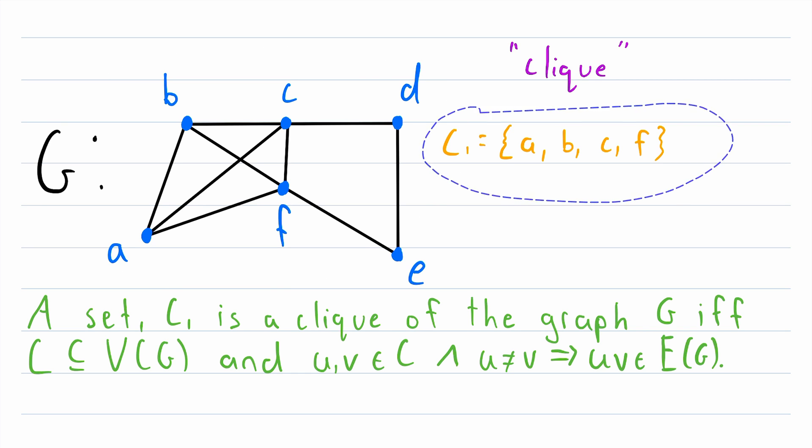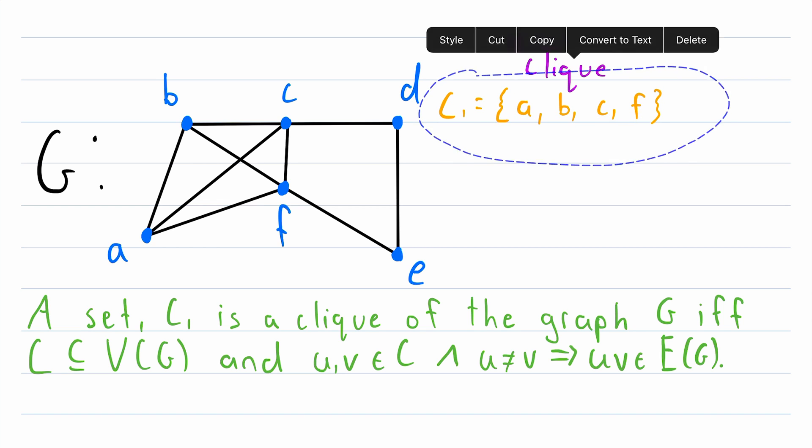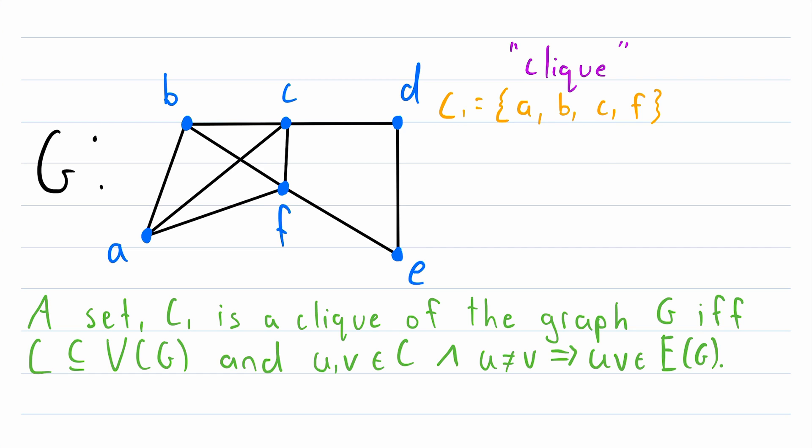And just to drive the point home further, we could sketch the subgraph induced by this clique. And if you're not familiar with what that means, the subgraph induced by a vertex set is just all of the vertices in the set. So B, vertex C, vertex F, and vertex A. So all the vertices in our set, as well as the edges that join those vertices in G.